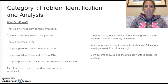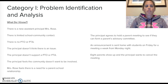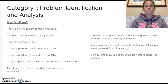Category 1 is Problem Identification and Analysis. After reading the case study, I know there is a new assistant principal, Mrs. Rose. She has noticed that there is limited school-community contact, limited parent contact from the teachers or from the school. There is no PTO or PTA. The principal doesn't seem to think this is an issue. Mrs. Rose has addressed this with him and has taken classes about the importance of school-community relationships, but the principal doesn't support a PTO or PTA. He feels the community doesn't want to be involved and whatever communication he has had has led him to believe that.